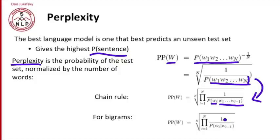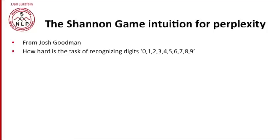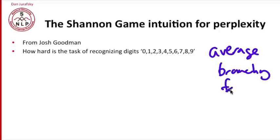It's just a function of the probability of the sentence. Because of this inversion, minimizing perplexity is the same as maximizing probability. There's another intuition for perplexity, also based on Shannon, and this example comes from Josh Goodman. This second intuition relies on the idea that perplexity is related to the average branching factor — at any point in a sentence, on average how many things could occur next. We'll see later this is related to the entropy of the upcoming things.